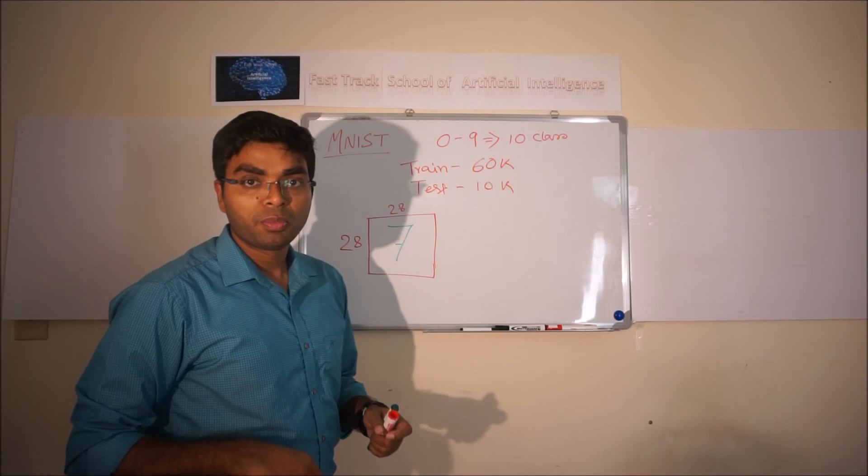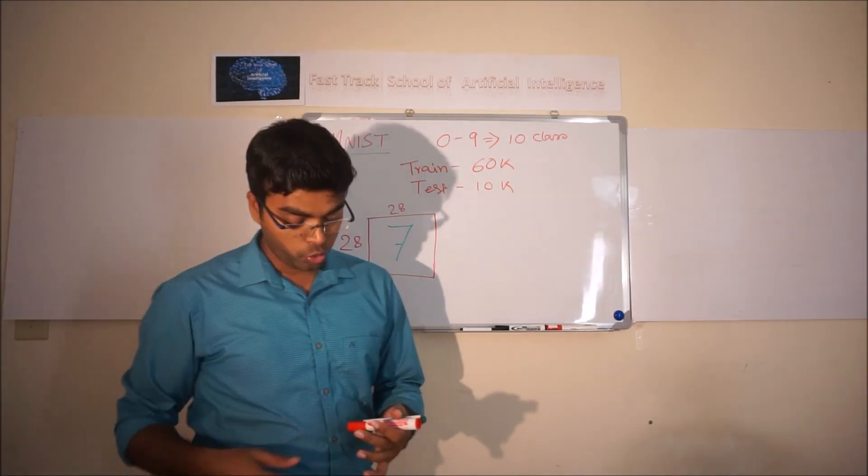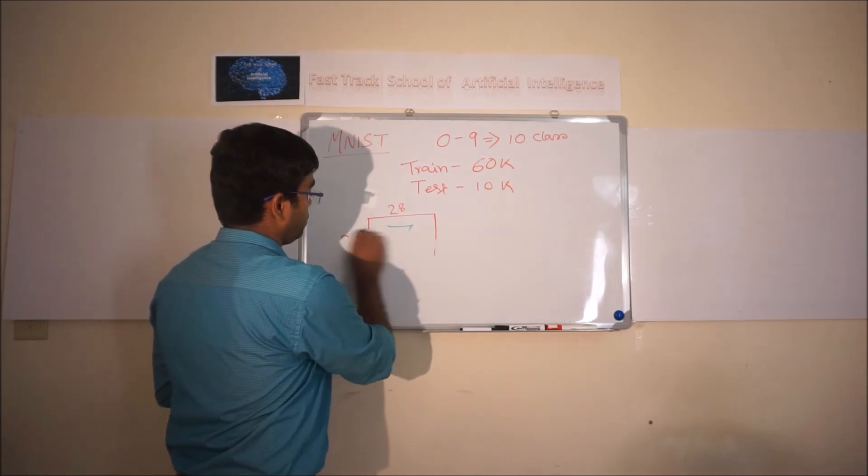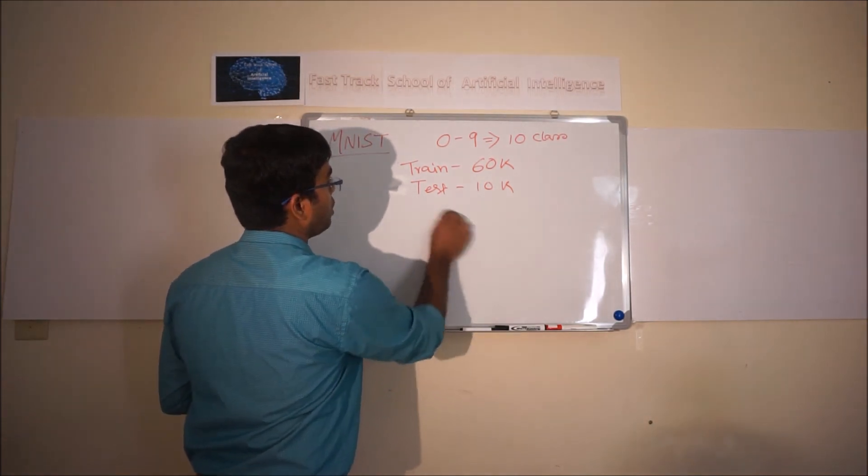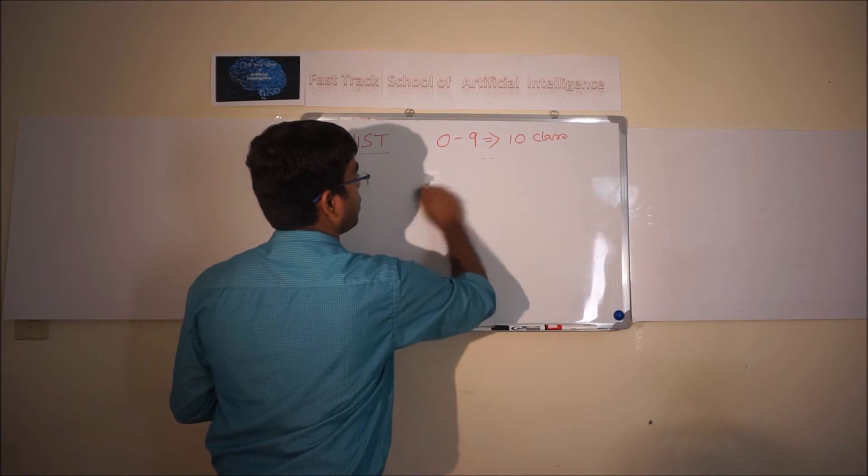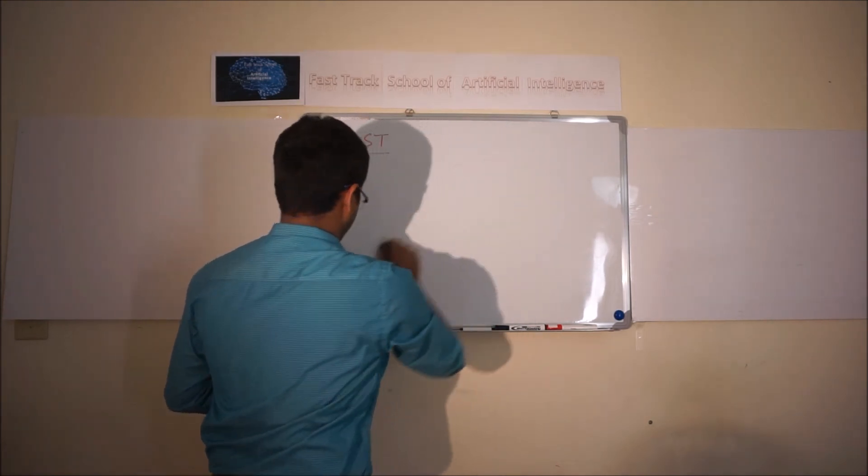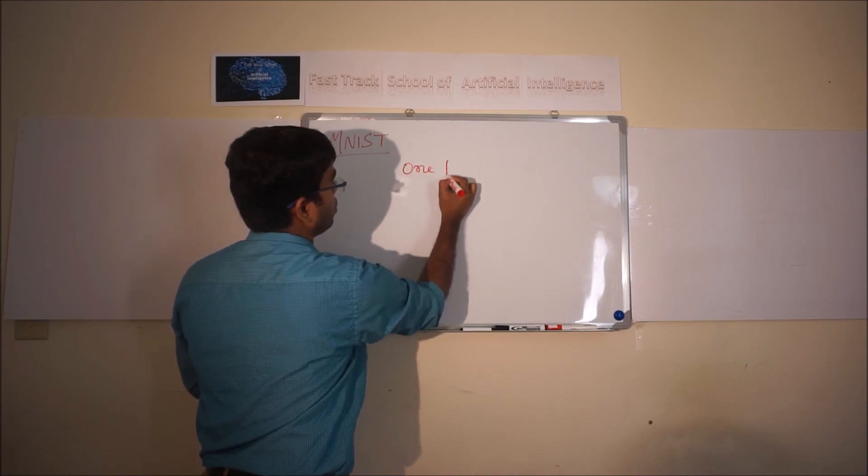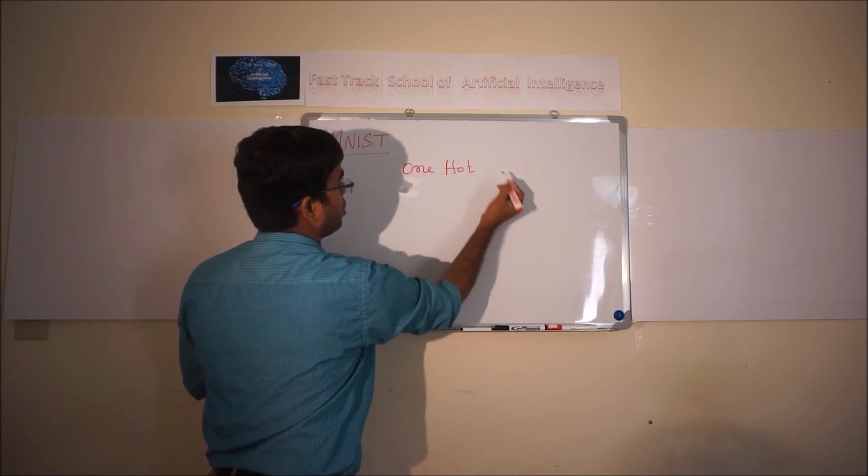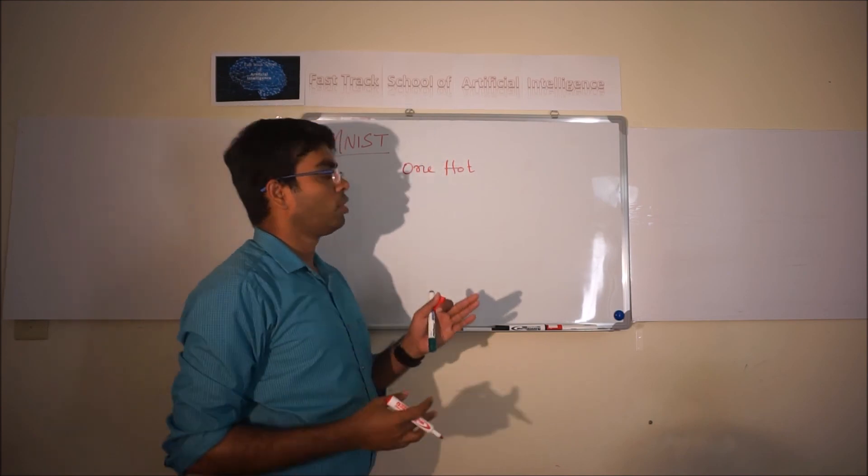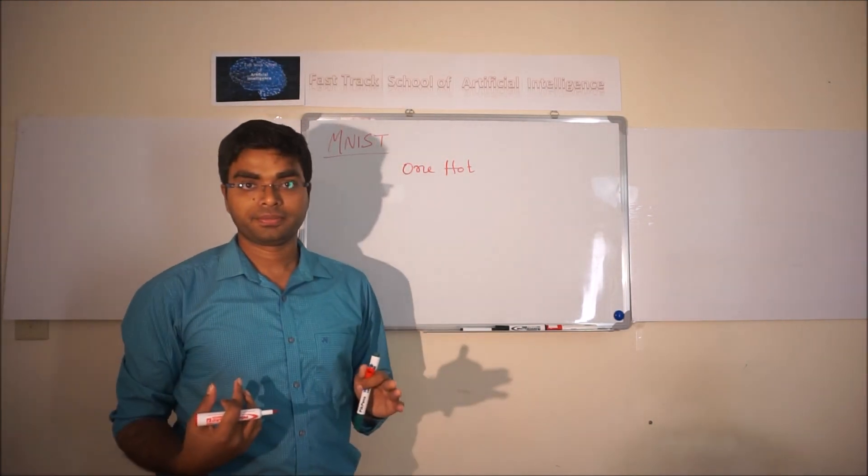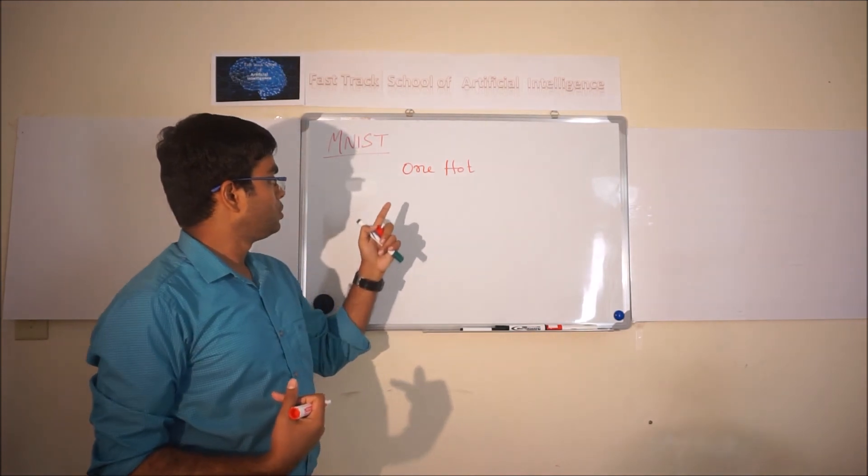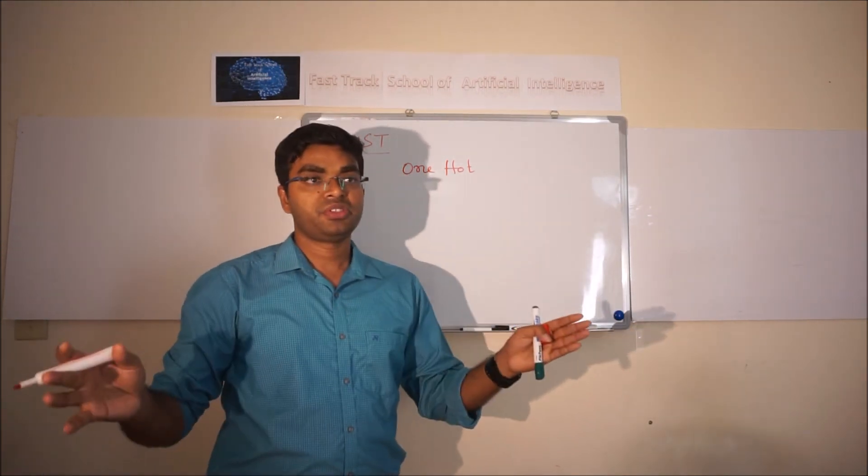Alright, one more thing, something called one hot mode. So this is called one hot mode. Sometimes it is called one hot encoding. What happens here, any particular number is being represented, it is converted.